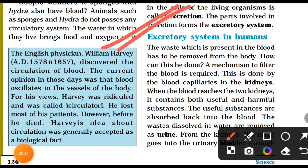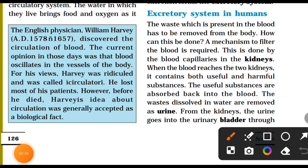The waste present in the blood has to be removed from the body. This is done through blood capillaries in the kidneys. When blood reaches the two kidneys, it contains both useful and harmful substances. The useful substances are absorbed back into the blood, while the waste dissolved in water is removed as urine.